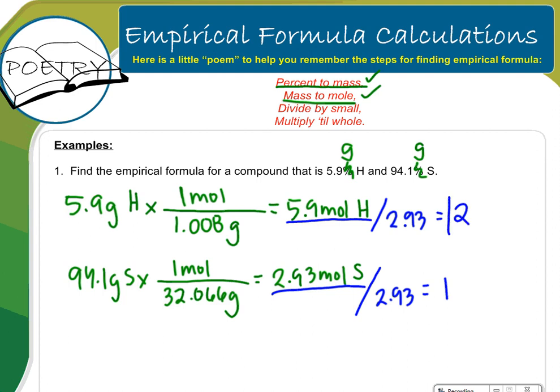What are these whole numbers and what do they mean? These whole numbers become the subscripts in my empirical formula. So since the 2 pertains to hydrogen, it's H2. Since the 1 here pertains to sulfur, there's just 1 sulfur. So H2S is my empirical formula.